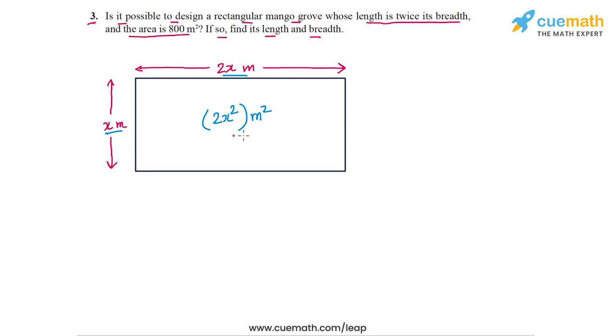And now we have to figure out whether this can be equal to 800 meters square. So all we need to do is figure out whether 2x² can be equal to 800. So this is basically a quadratic equation in x and we have to figure out whether it has real roots or not.